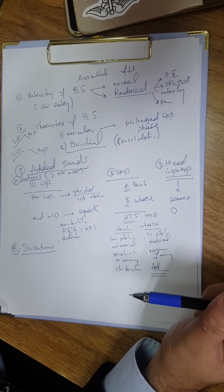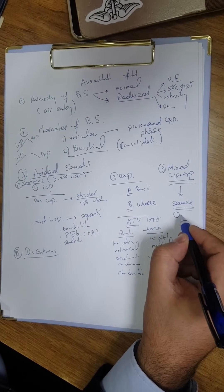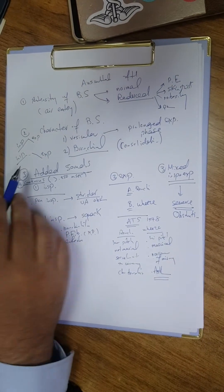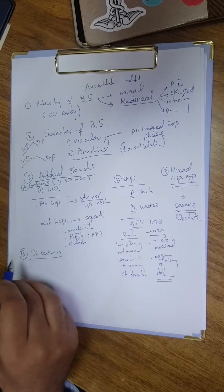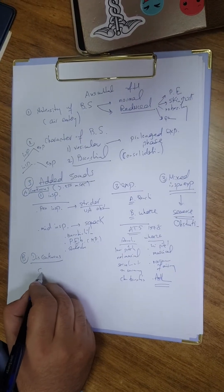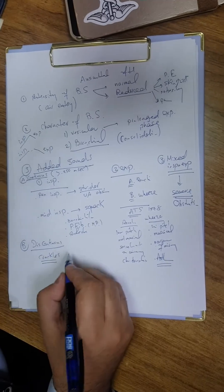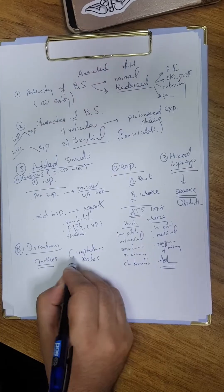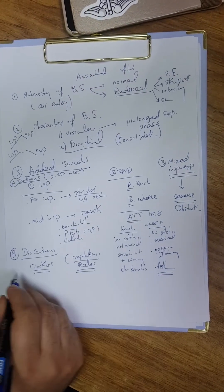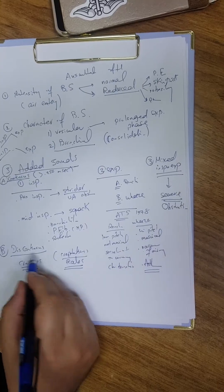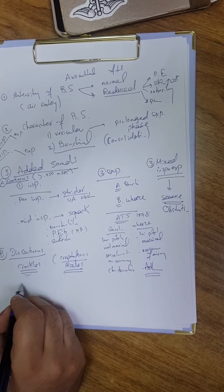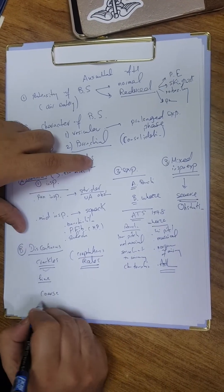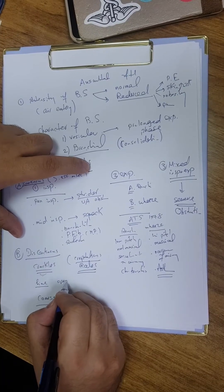The discontinuous added sounds are the crackles. They are called crepitations by the British, crackles by the Americans. Now crackles is the actual name. The crackles are mainly inspiratory, produced by opening of closed alveoli.